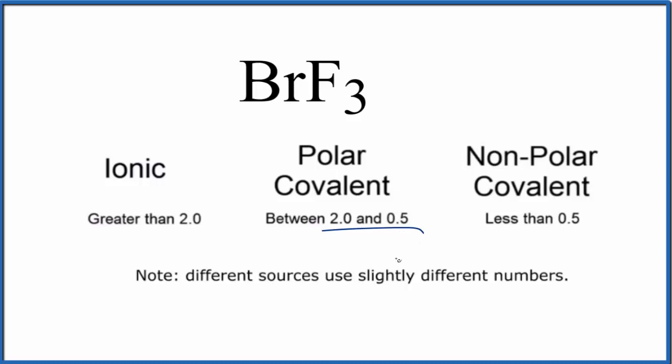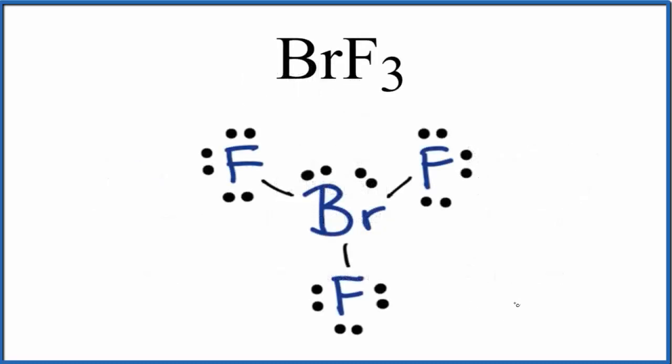The bond between the bromine and fluorine atoms—each one of those bonds is a polar bond. But we need to look at the molecular geometry to really understand if we have a polar molecule. Let's do that.